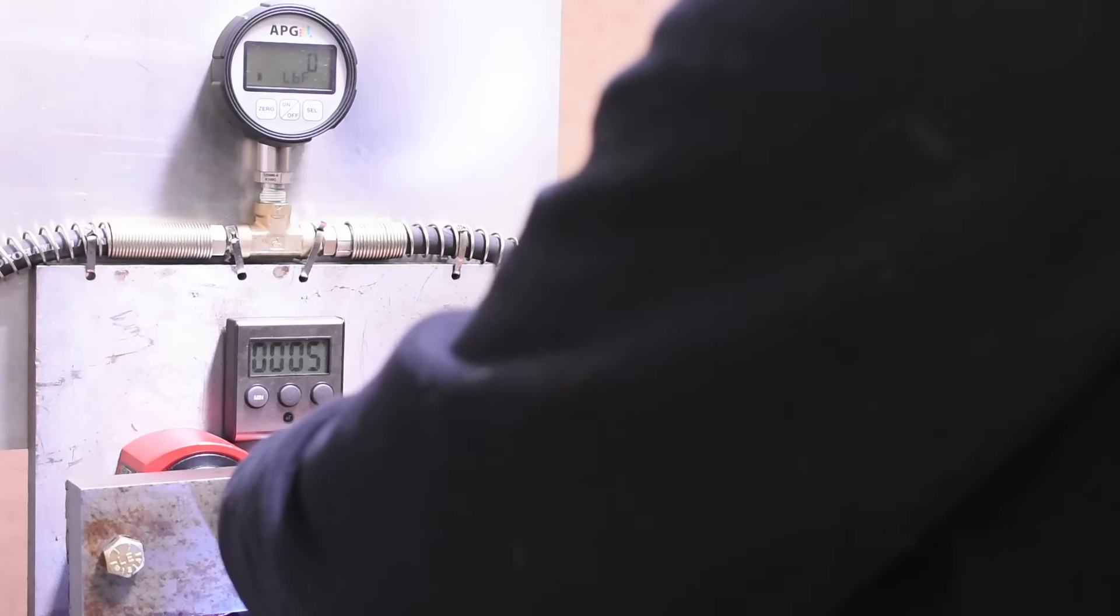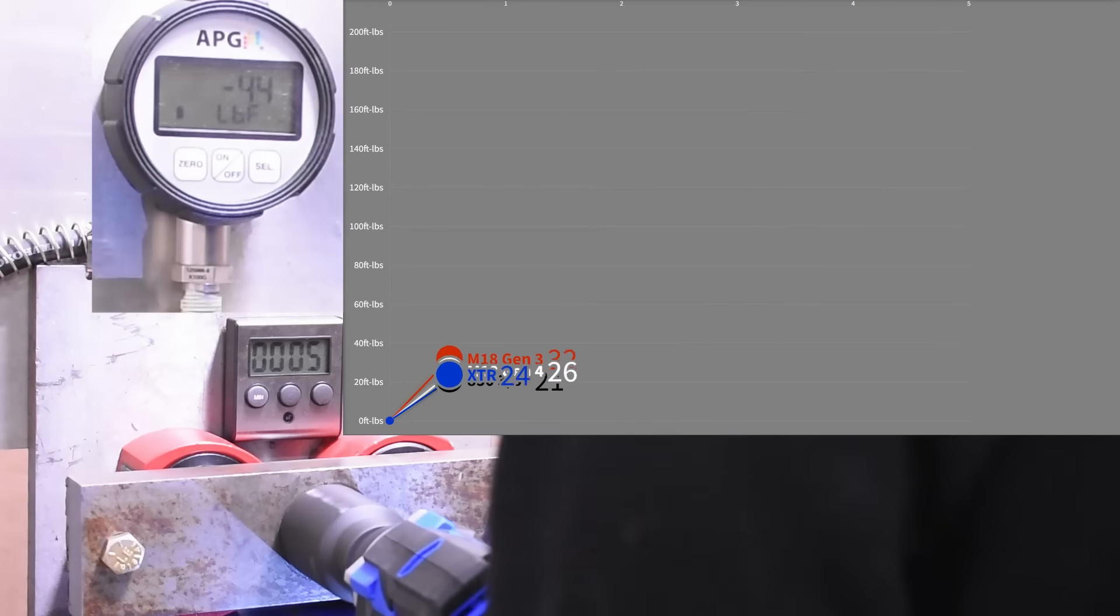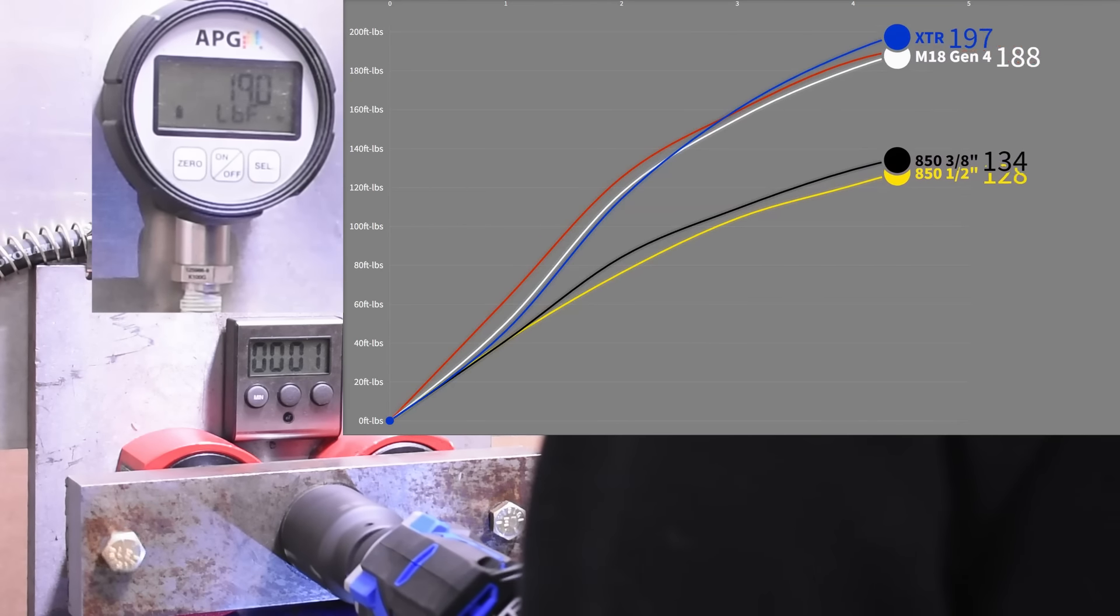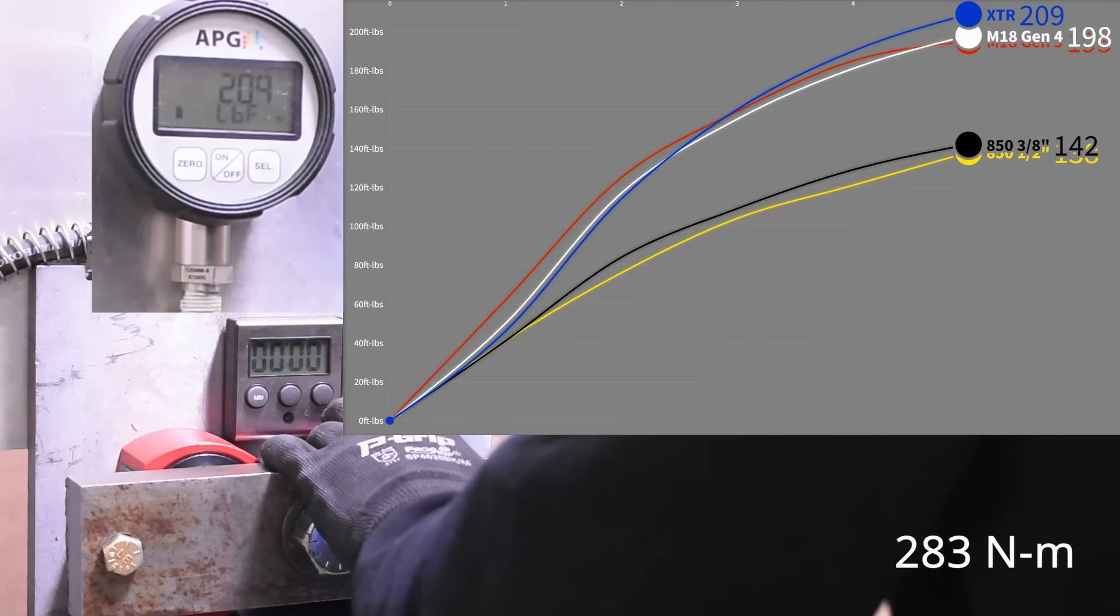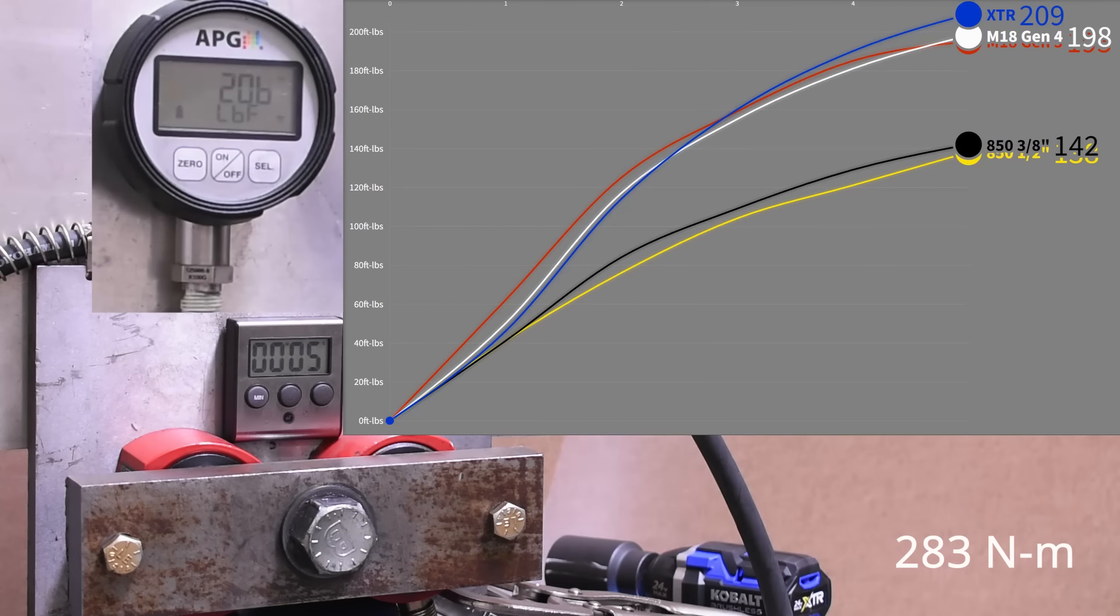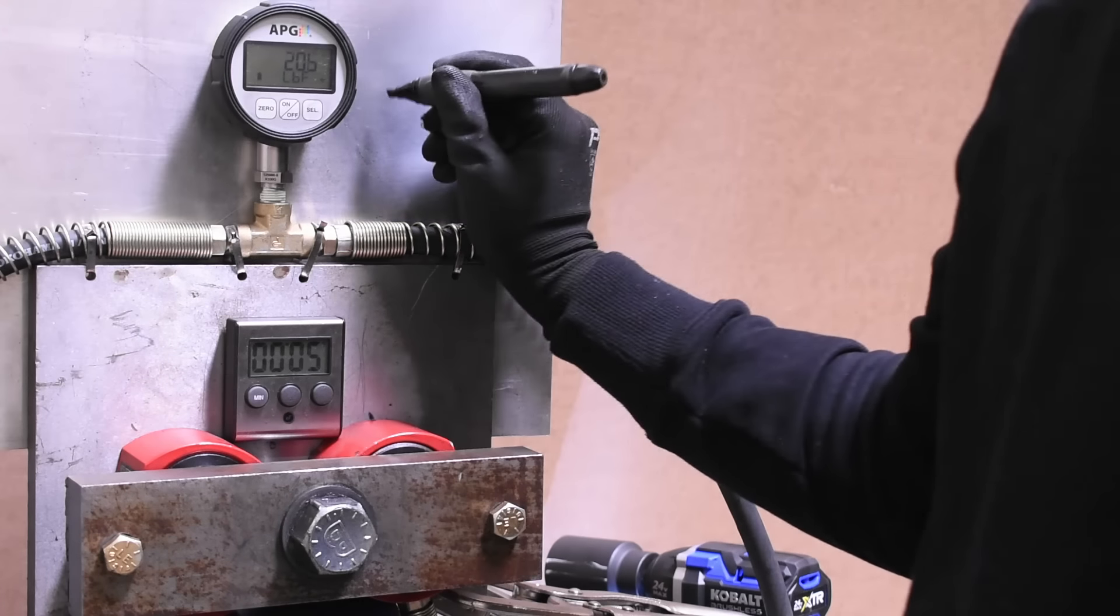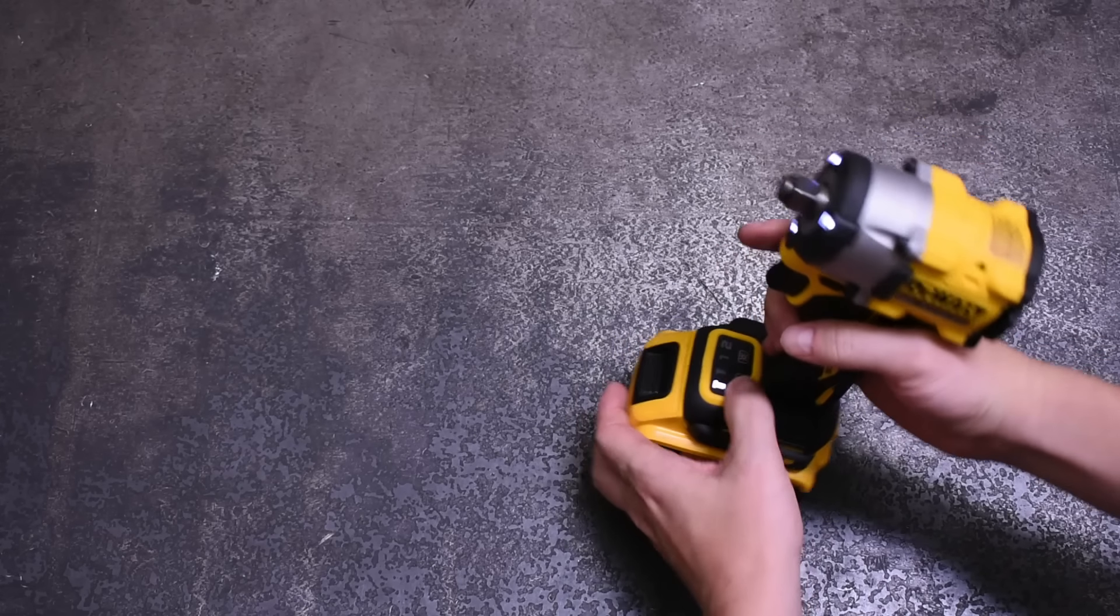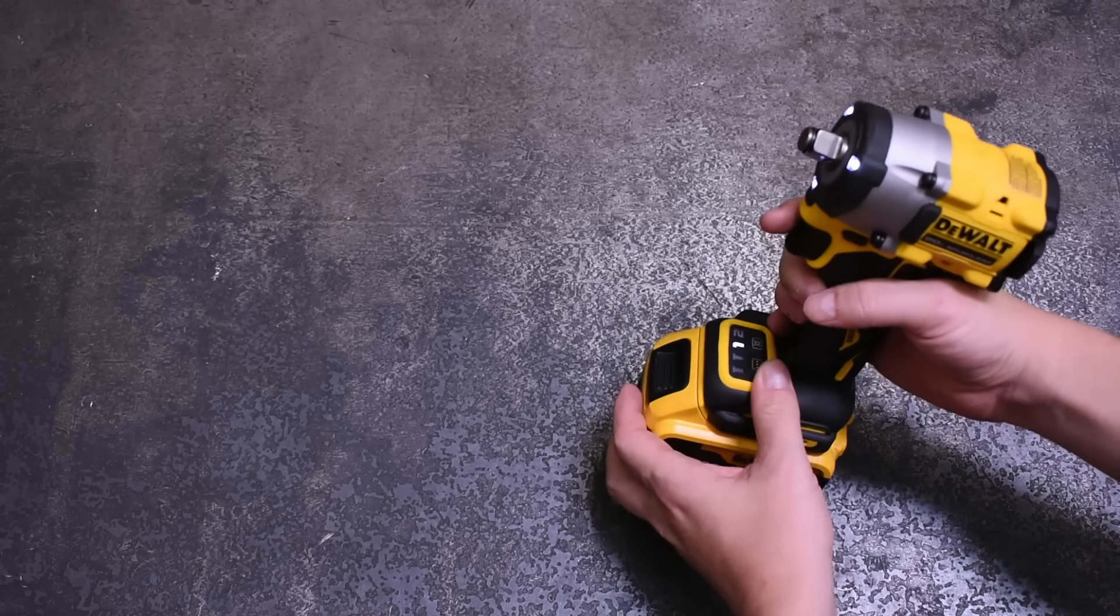Here is its 5 second working torque test versus the others. 209 foot pounds coming in later, which makes sense on this one. It should have less IPM but bigger hits. For some perspective, that's 10% more than a 450 foot pound rated DCF 921 in this test.